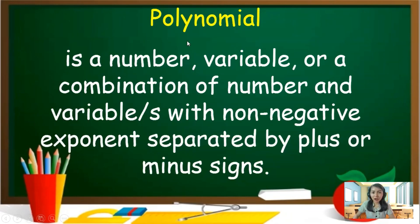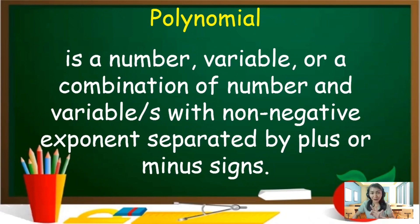Again, polynomial — poly means many, nominal means terms. Also, a polynomial is a number, variable, or a combination of number and variables with non-negative exponents separated by plus or minus signs. Let us recall the types of polynomial: we have monomial, binomial, trinomial, and multinomial.